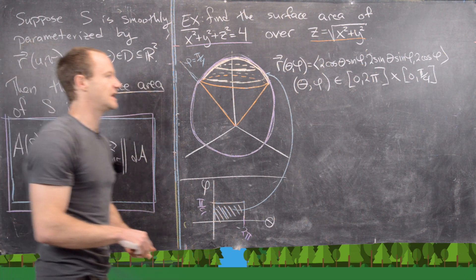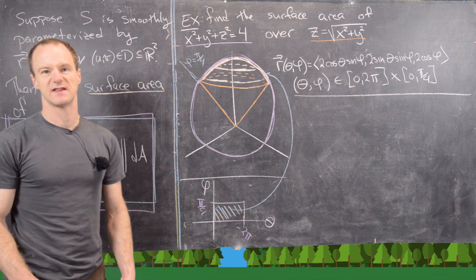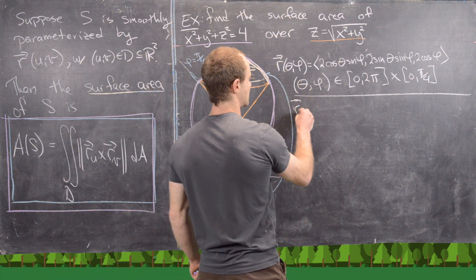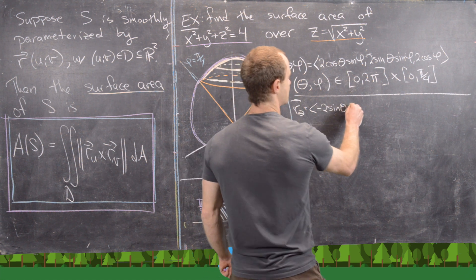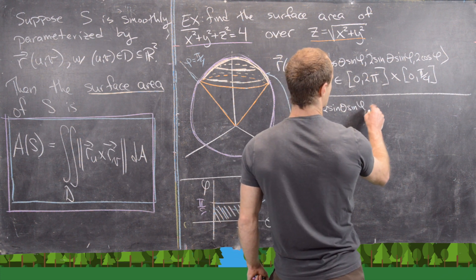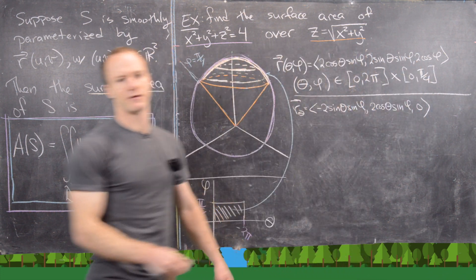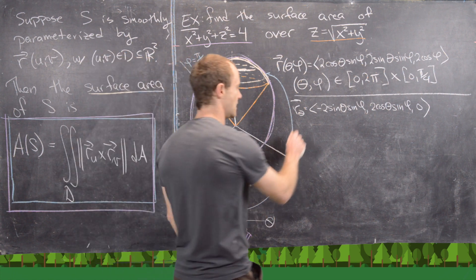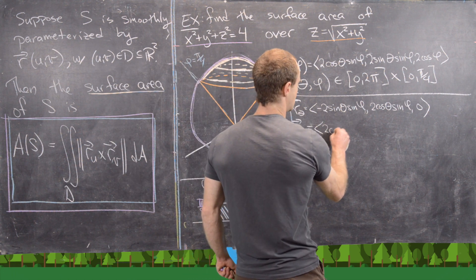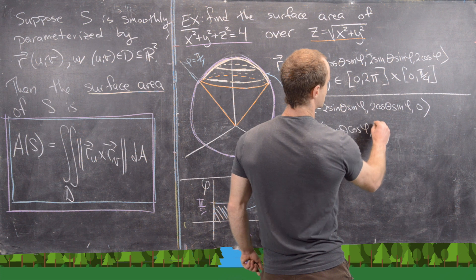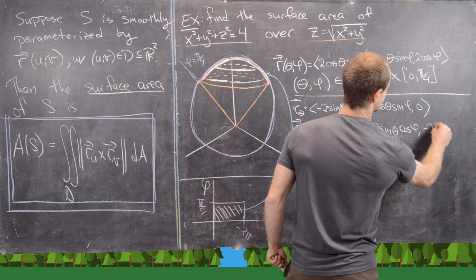Now we need to calculate the partial derivatives of R with respect to θ and φ. R_θ = (−2sinθ sinφ, 2cosθ sinφ, 0), since the derivative of cosφ with respect to θ is zero. And R_φ = (2cosθ cosφ, 2sinθ cosφ, −2sinφ).